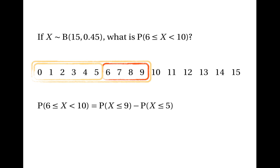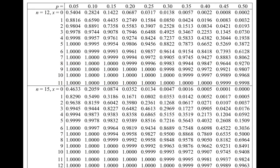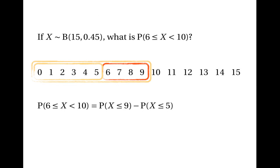We can work out these two probabilities using the table. We're still looking at n equals 15, but this time at the column where p is 0.45. The probability that X is less than or equal to 9 is found by following along the 9 row: that probability is 0.9231. The probability that X is less than or equal to 5 is found along the 5 row: that's 0.2608. So we do 0.9231 minus 0.2608, which gives 0.6623.